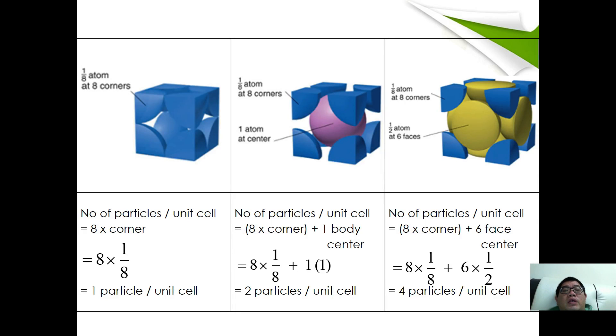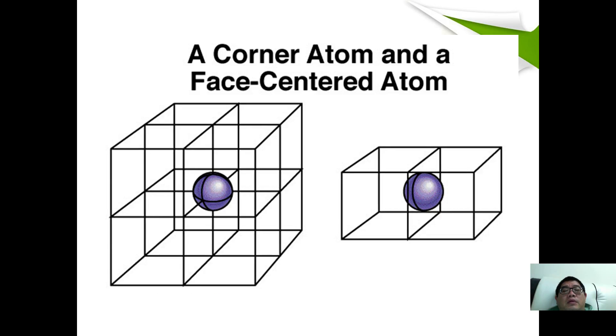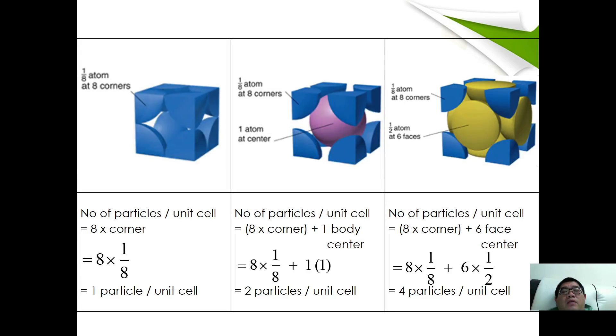If we cut through the images that we saw just now, this is what we have for simple cubic cell, which is made from 8 corners. 8 corners times 1 over 8 of particles, we have 1 particle per unit cell. For body-centered cubic, when we cut through the sample just now, we found out that it is made out of 8 corners and 1 atom at the center. So how many number of particles are involved? We have 8 corners plus 1 body center, therefore 2 particles per unit cell.